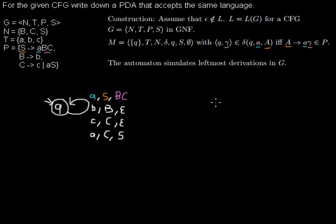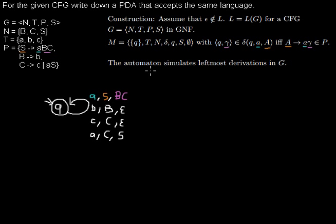Now I'd like to show you how the automaton works. The definition says that the automaton simulates the leftmost derivation from the grammar. First I'd like to show you the leftmost derivation of a word — let's take a longer word so that more interesting things happen.